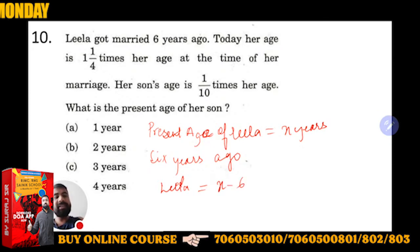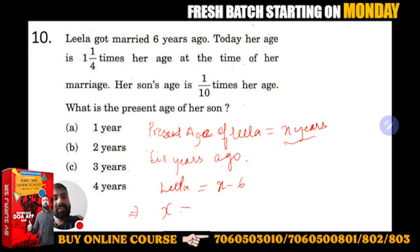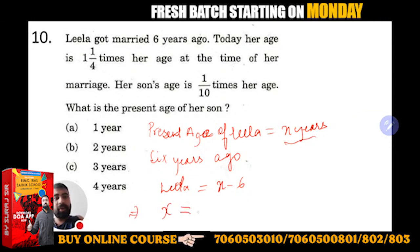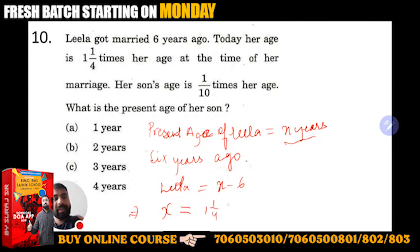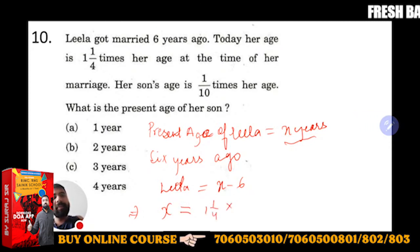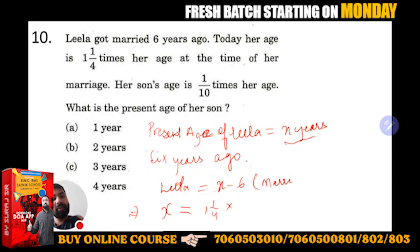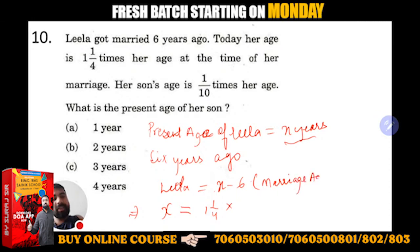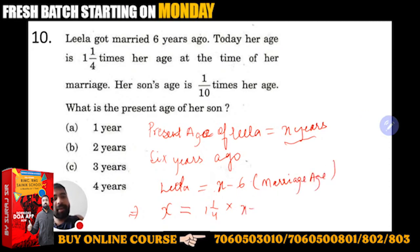Today her present age is equal to 1 and 1 by 4 times her age at the time of her marriage. Six years ago was her marriage, so this is her marriage age: 1 and 1 by 4 into (x minus 6).